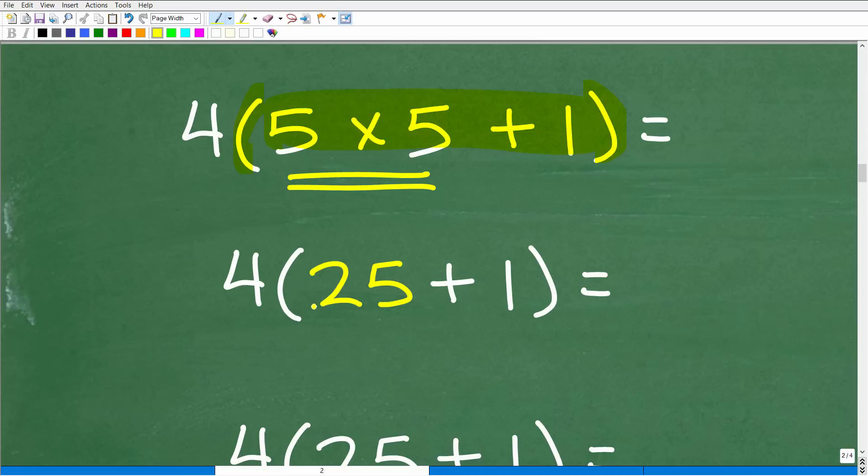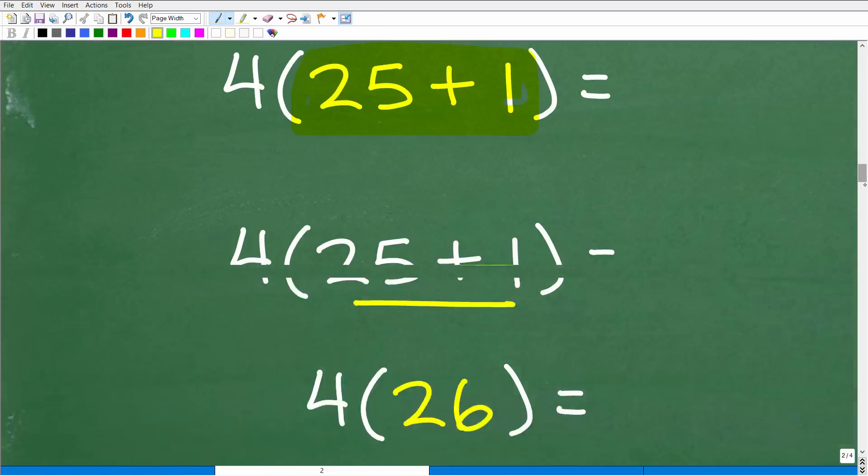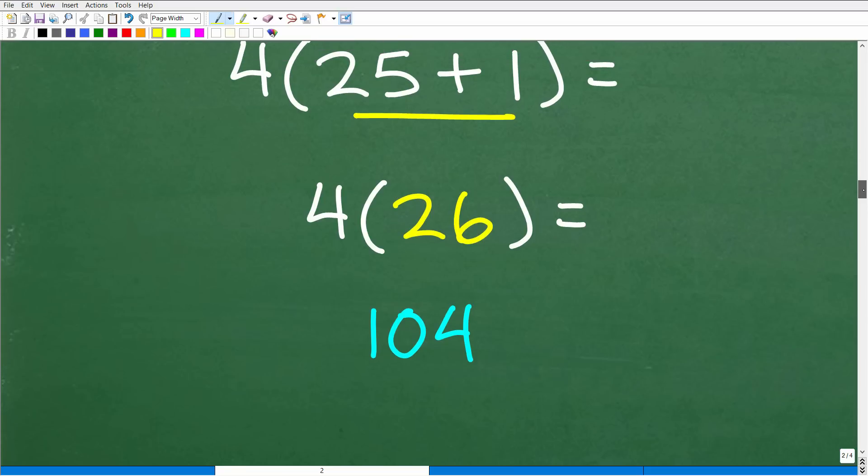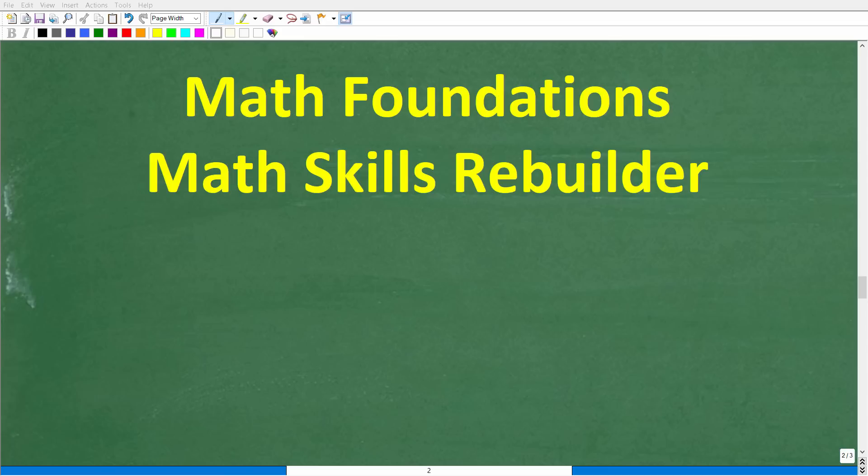So now we have 4 times 25 plus 1. But again, we're not done inside the parentheses. So we just keep working inside of the parentheses until we are completely done. So 25 plus 1, of course, is 26. So now we're finally down to this point in the problem. So 4, this again means multiplication, 4 times 26. Of course, you could do that and you'll get 1, 0, 4.